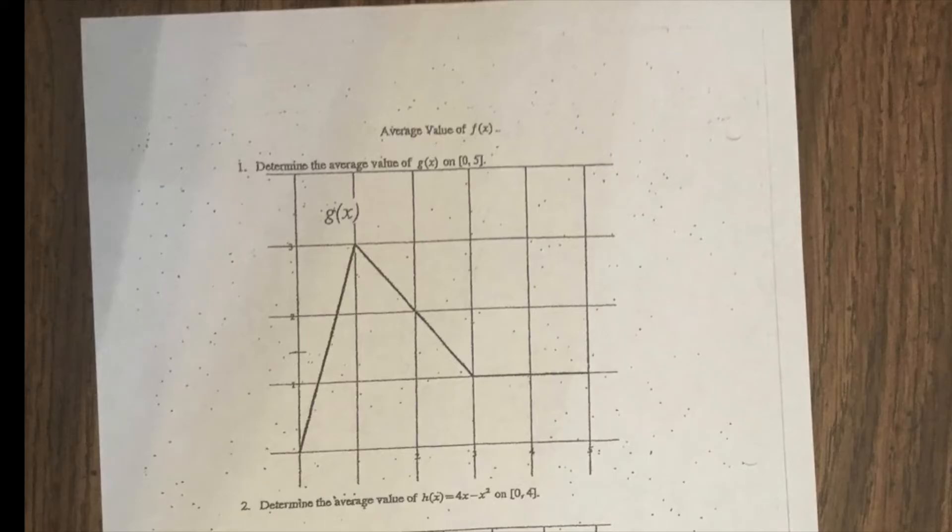We're going to do the mean value theorem, which means we're going to find the average. So if you have several numbers and you want to find the mean, you're just going to add them all up and divide by whatever number of terms there is. We're going to do that with a continuous function here, and we're going to start off with this first graph.